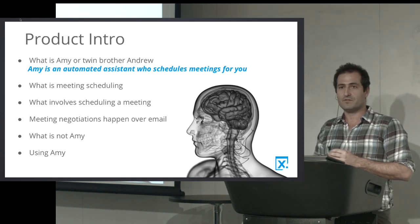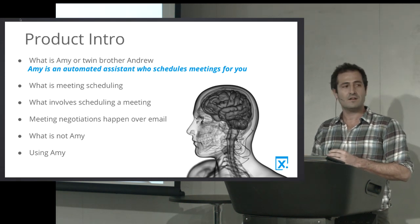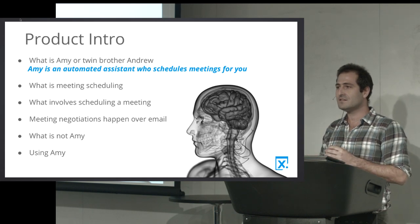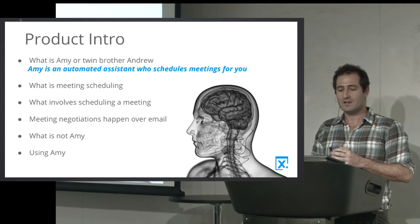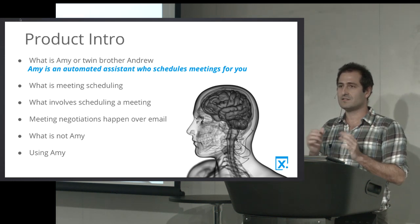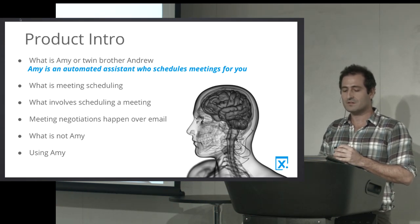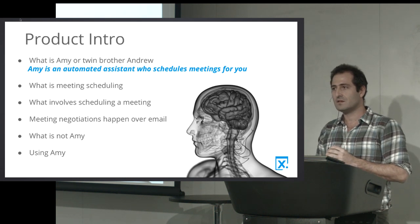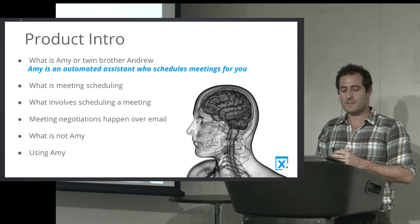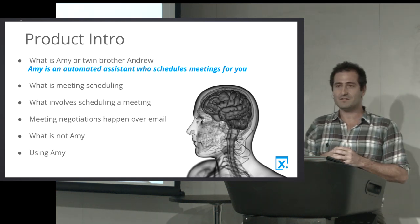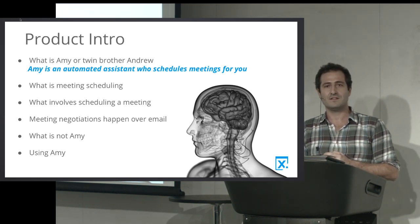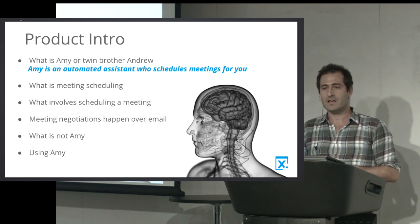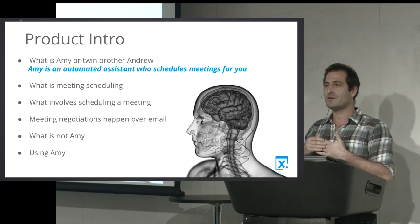Most meeting negotiations happen over email, at least in the business or corporate domain. We want to be both humble and focused, so we don't want to expand this automated assistant beyond the domain of scheduling meetings. We also want to stay in the domain of meetings scheduled over email, because that singular focus actually helps our performance quite a bit, as I'll show later. Amy is not an app — it's not something you download to your phone or laptop, and it's not something you need to update with new releases. Amy is an invisible assistant that you interact with through email.